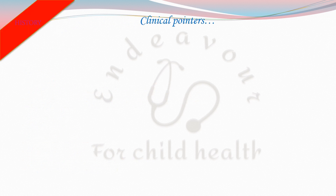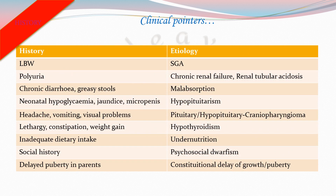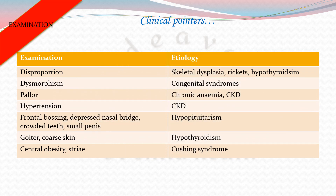There are certain clinical pointers to short stature. In history, for example, low birth weight suggests small for gestational age; polyuria points towards a chronic renal illness like chronic renal failure or renal tubular acidosis; chronic diarrhea points towards malabsorptive states. On examination, disproportionate short stature and dysmorphism are indicative of congenital syndromes.